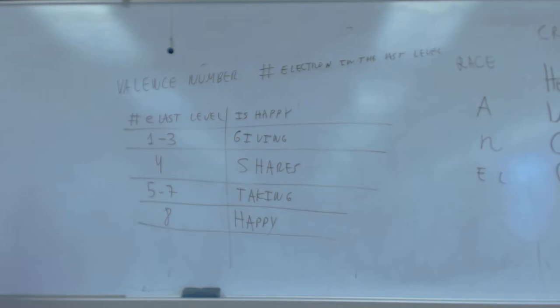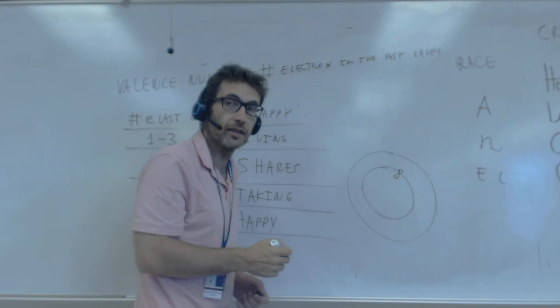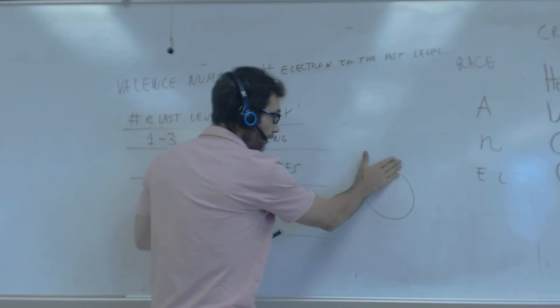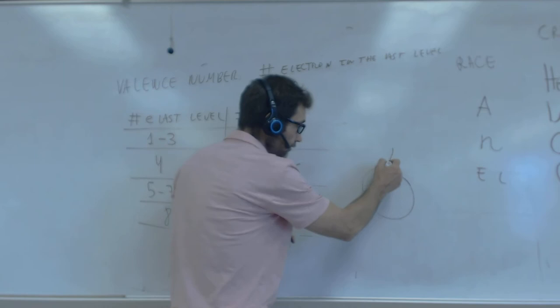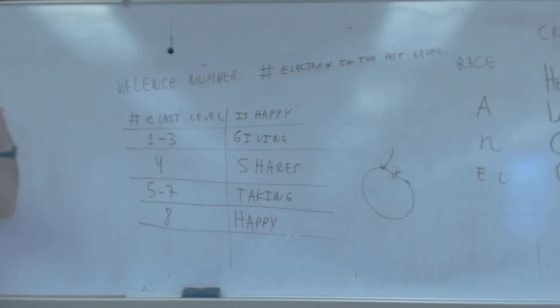If it has one to three on the last level, it gives them away. Imagine an atom with one electron here — the easiest way to be happy is to lose that one, and then it has eight on the last level. But if it has seven on the last level, the easiest way to be happy is to take one electron, and then it's eight and now it's happy. So it depends on the electrons on the last level: one to three — give away; four — share; five to seven — take to reach eight.